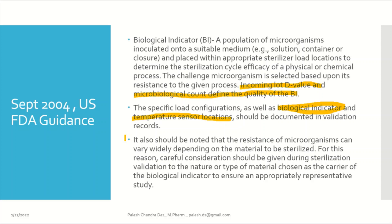It should be noted that the resistance of microorganisms can vary widely depending on the material to be sterilized. For this reason, careful consideration should be given during sterilization evaluation to the nature and type of material chosen as the carrier for the biological indicator, to ensure it appropriately represents the study. For example, if you want to evaluate a stainless steel surface, your BI can be enumerated on the SS surface. If you are demonstrating sterilization on glove surfaces, the BI carrier can be chosen to match that surface.